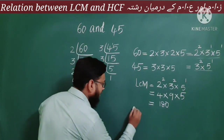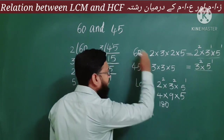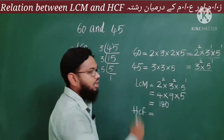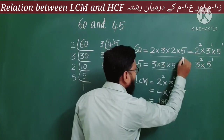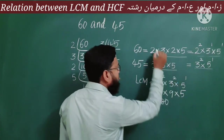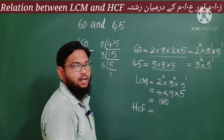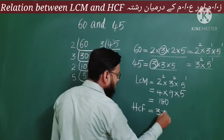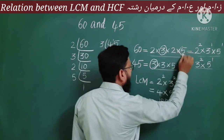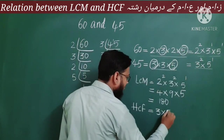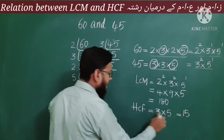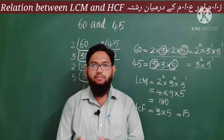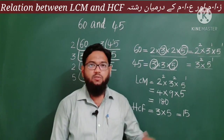Now let us find the HCF. From the prime factorizations, we take the numbers that are common to both 60 and 45. Looking at both factorizations, 3 is present in 60 and also in 45, so we take 3. Similarly, 5 is in 60 and also in 45, so we take 5. Therefore, HCF = 3 × 5 = 15. So the HCF of 60 and 45 is 15.